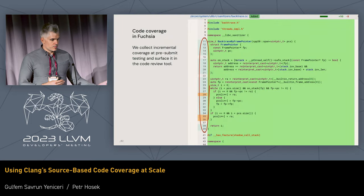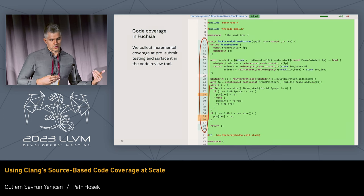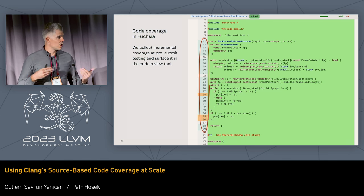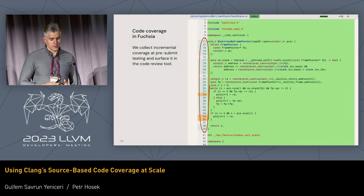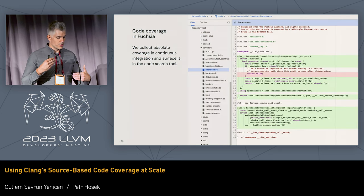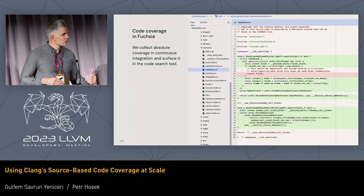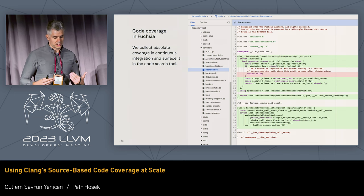In our code review tool, whenever a developer uploads a patch, we run tests, we collect coverage, and then we render this coverage directly in the code review tool — Gerrit in our case — so that both the author of the patch as well as the reviewer sees how well those tests are covering the implementation. We also do the same in post-submit: we run all tests, collect coverage, and render it in the code browser tool so anybody browsing the code can see how well it's covered.